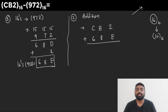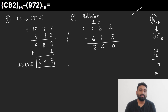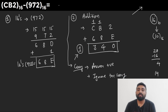Now in the second step we perform addition: CB2 plus 68E. E is 14; 14 plus 2 is 16, which in hexadecimal is 10 — so 0 is the answer with carry 1. Then B (11) plus 1 is 12, and 12 plus 8 is 20; 20 minus 16 is 4, carry 1. Then C (12) plus 1 is 13, and 13 plus 6 is 19; 19 minus 16 is 3, carry 1. We are getting carry, so the answer is positive — ignore the carry. The answer is 340.